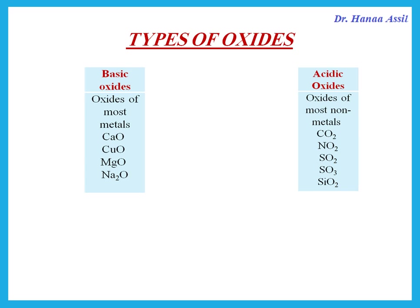Oxides of most non-metals are acidic. So carbon dioxide is acidic. Nitrogen dioxide, sulfur dioxide, sulfur trioxide, silicon dioxide — all of these are acidic oxides.